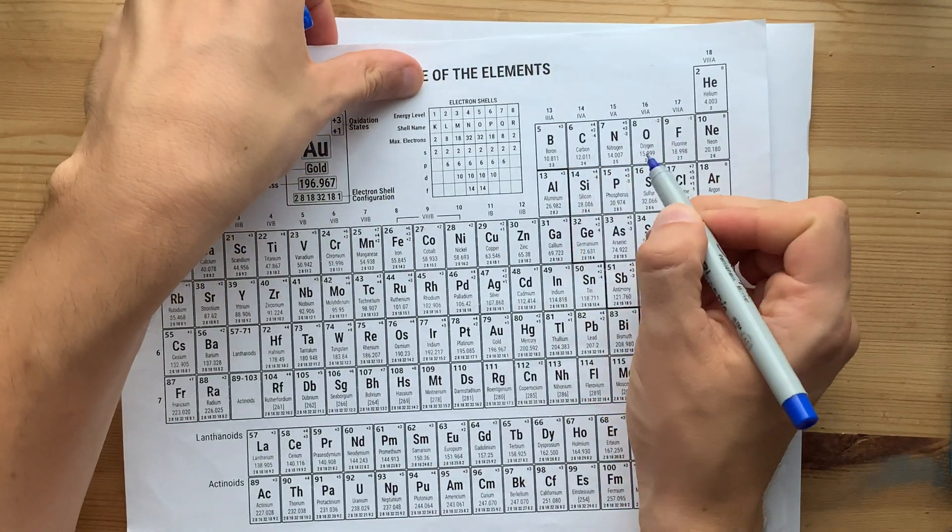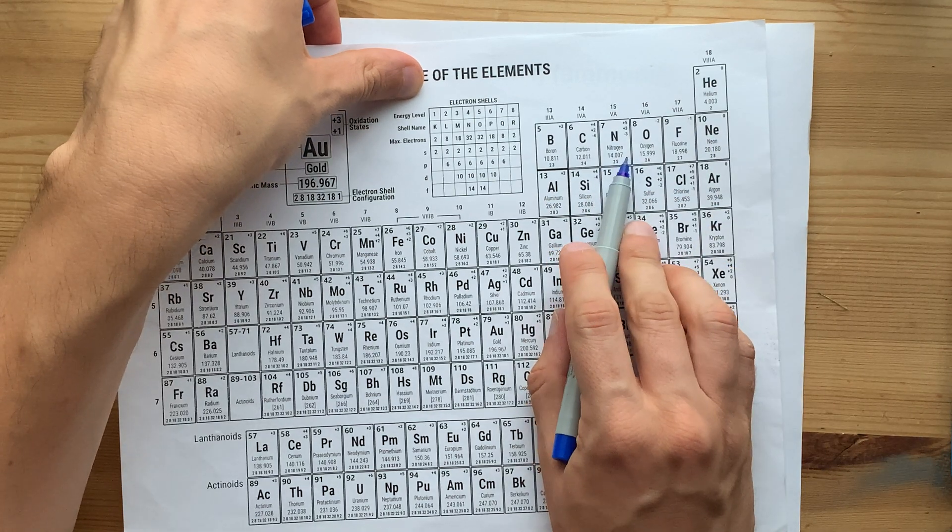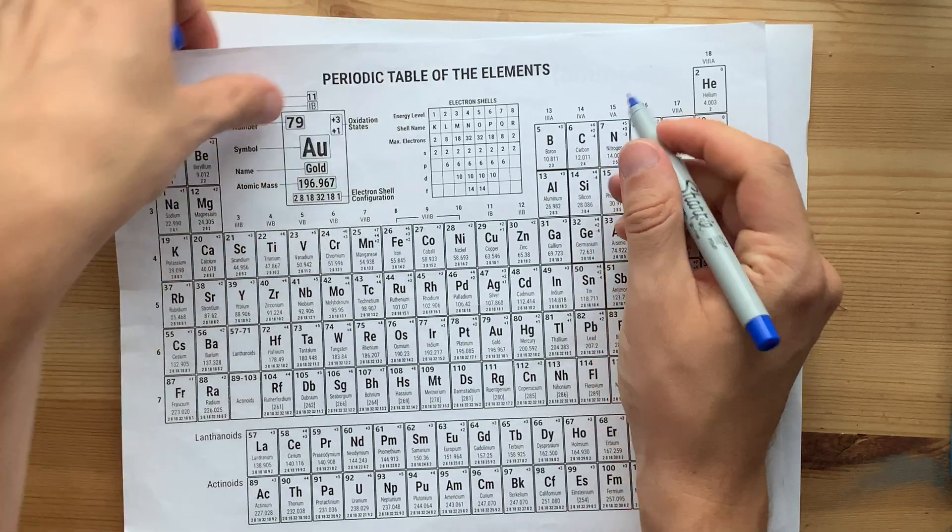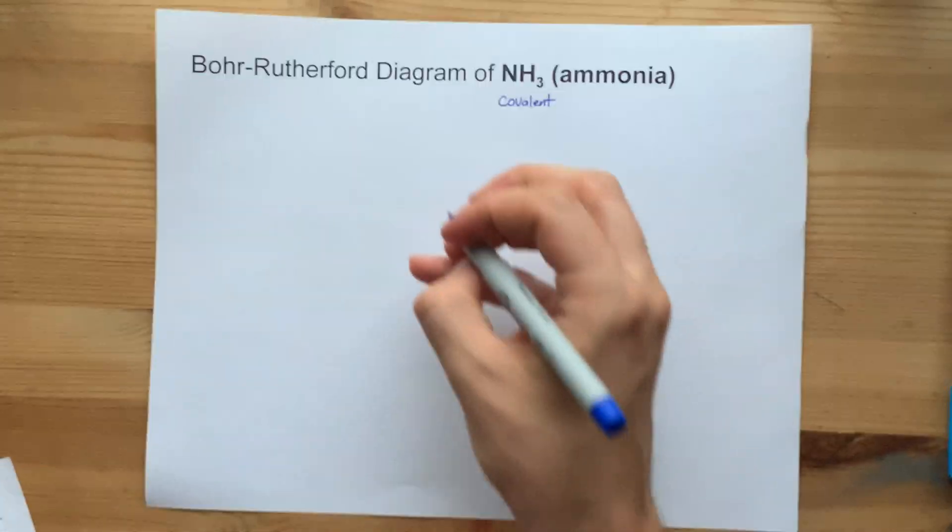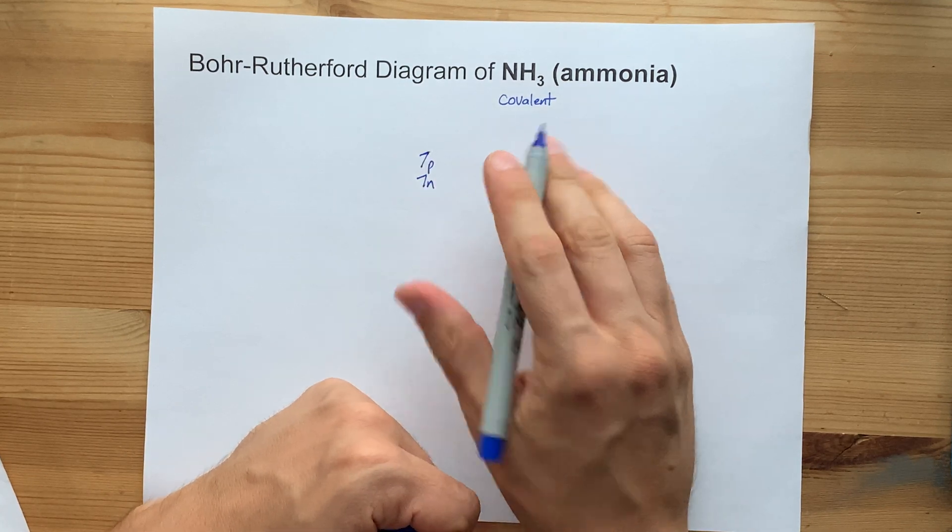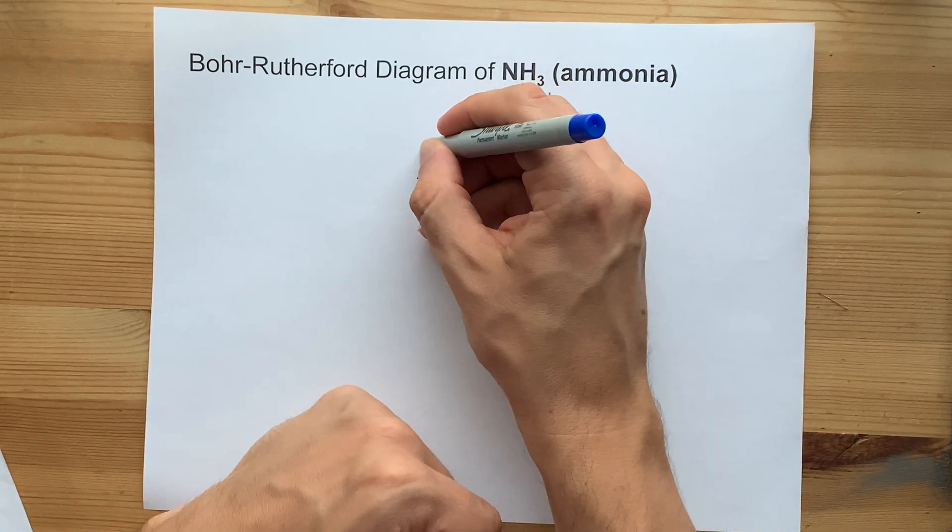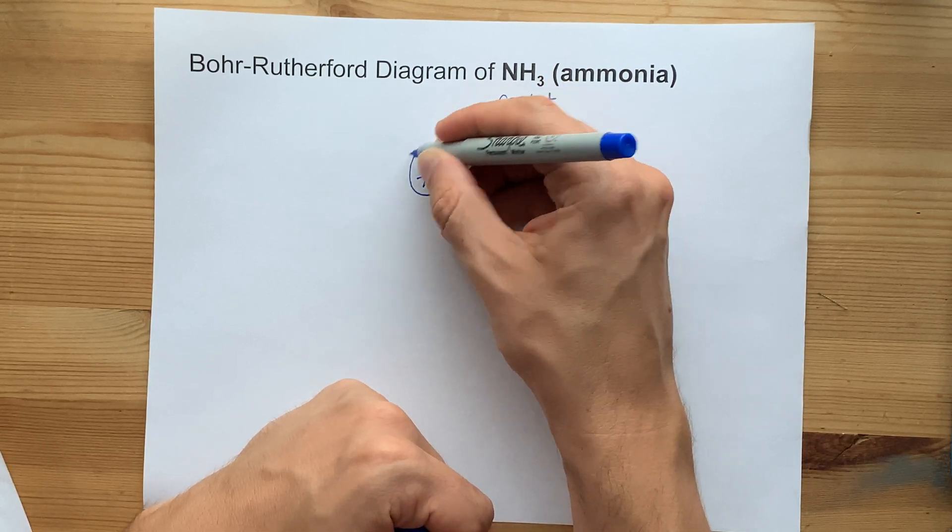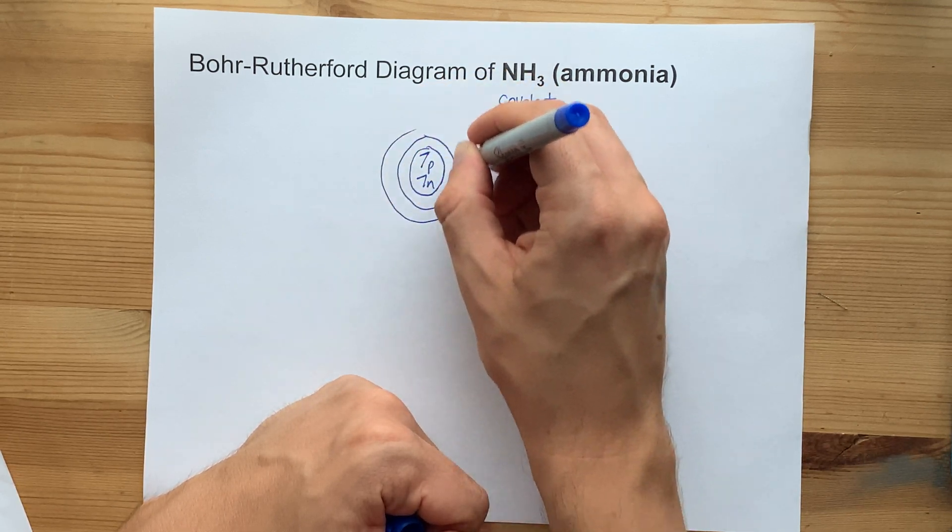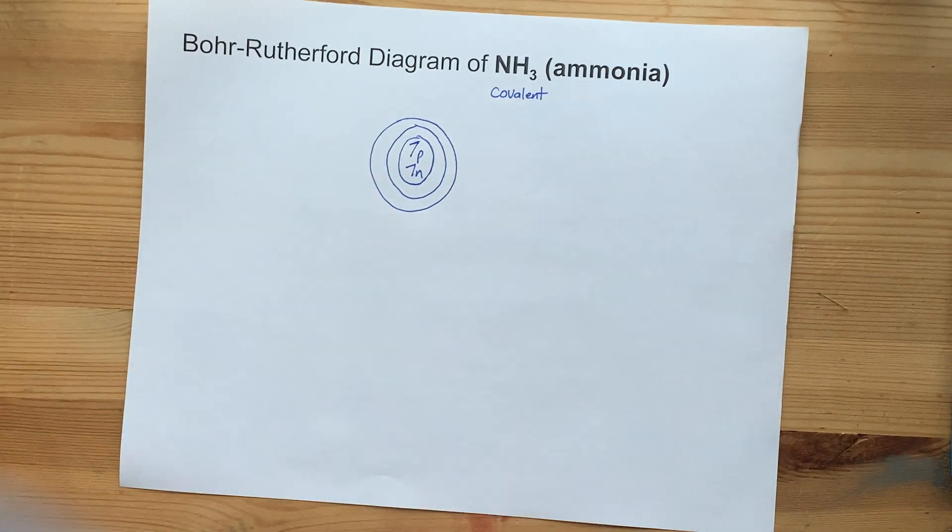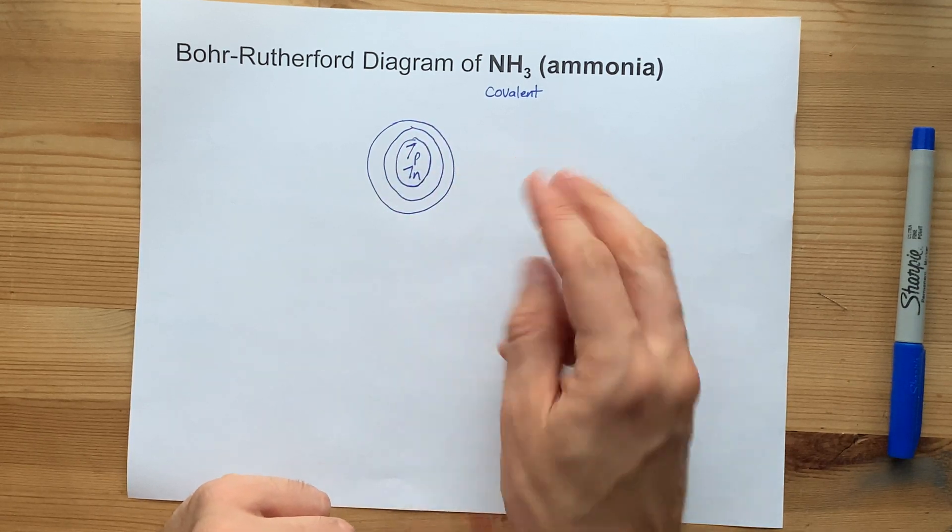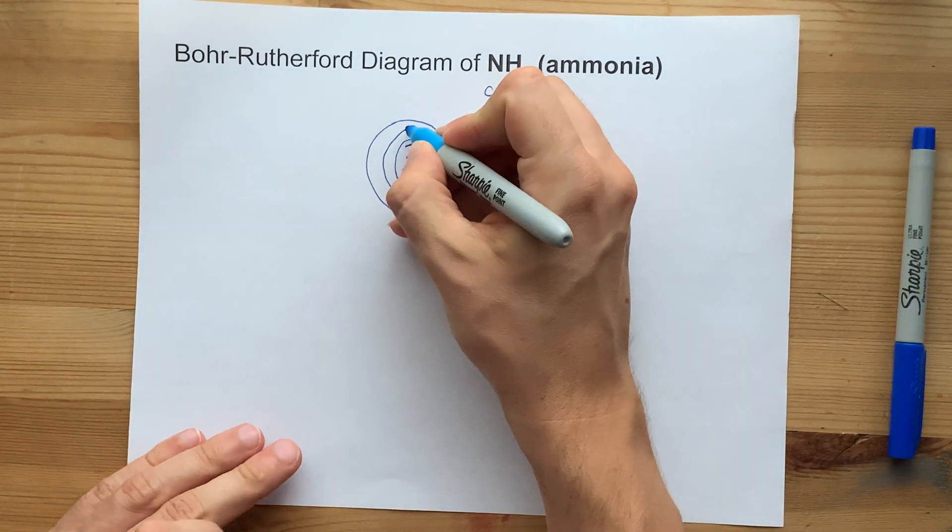Nitrogen has an atomic number of seven, that's seven protons, and a mass of 14 approximately. 14 minus seven leaves us with seven neutrons. So I'm going to draw the nucleus here of seven protons, seven neutrons, and put a circle around it to show that that's the nucleus. Then I give myself a first shell and a second shell. I know it's going to need two shells because it's in the second row, but I need seven electrons total, and you're allowed to put two in the first shell only.